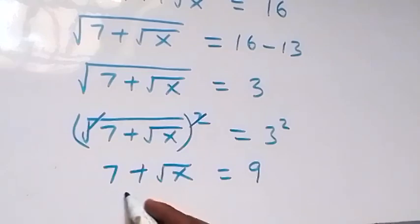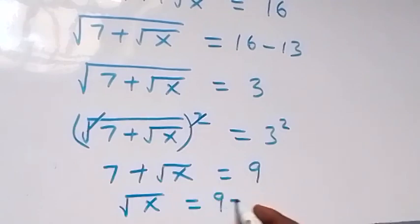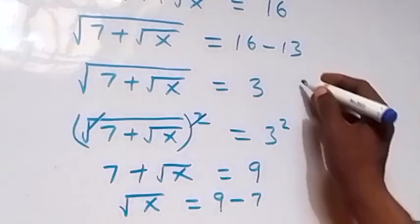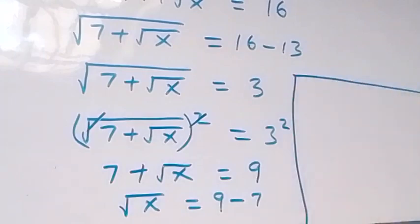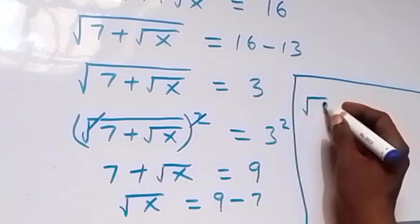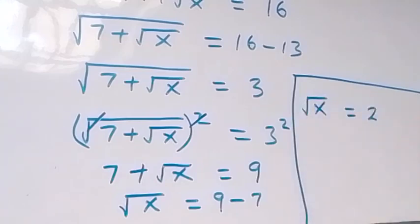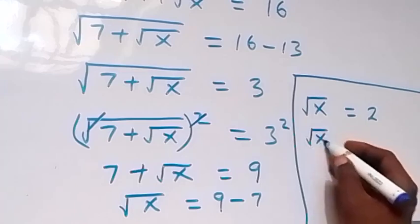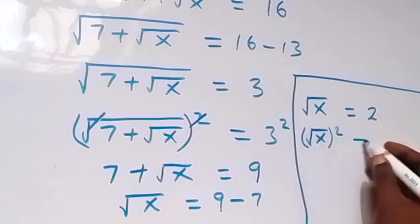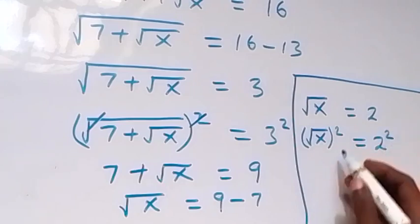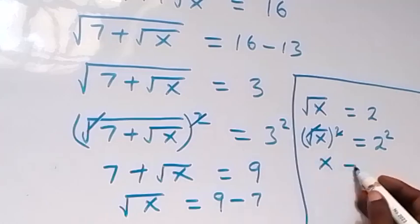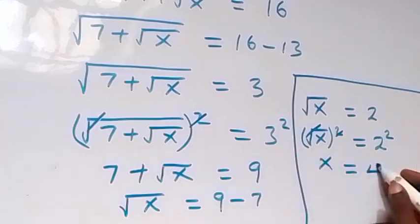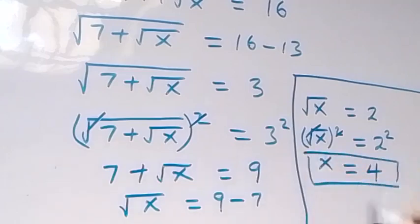Then we also take 7 to this side, then we have root x now equals 9 minus 7, and here it means we have root x now equals 2. Then we square both sides again and we have root x squared equals 2 squared. The square cancels the square root, so x now equals 2 times 2, and that is 4. So we have x equals 4.